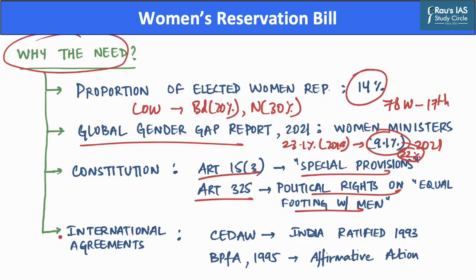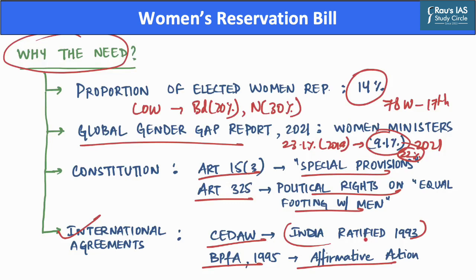India has also acceded to several international agreements that support proactive state measures for women's political development. The Convention on Elimination of All Forms of Discrimination Against Women (CEDAW), ratified by India in 1993, provides for legislation to ensure full advancement of women and eliminate discrimination in political and public life. Further, the Beijing Platform for Action of 1995 endorses affirmative action for women in political spheres to achieve democratic transformation, women empowerment, and sustainable development goals.